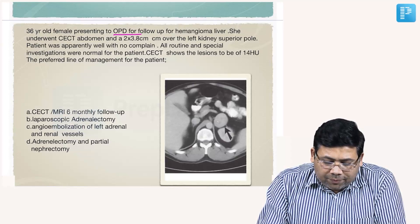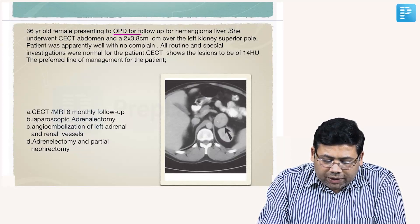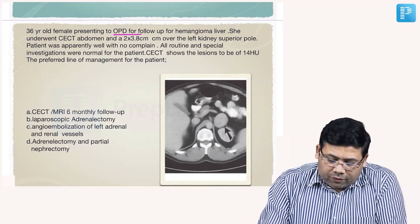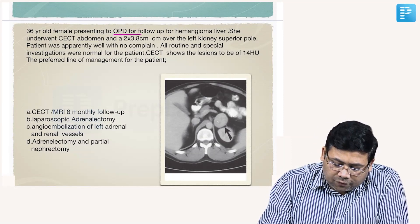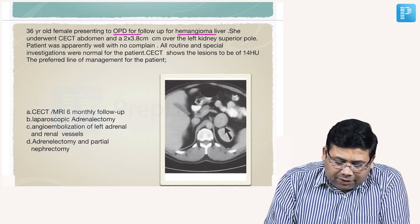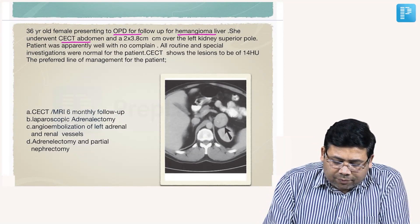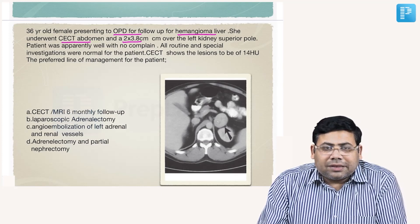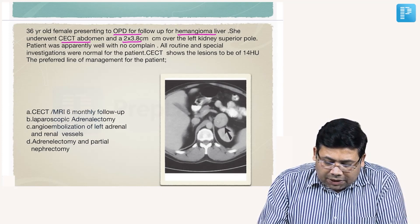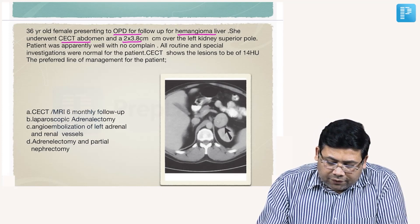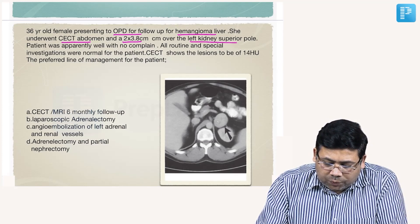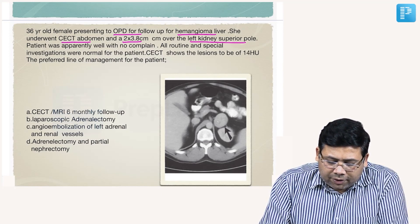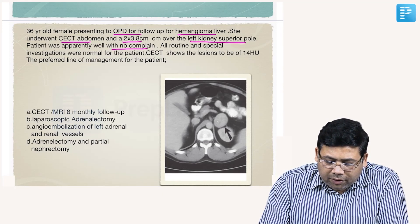A 36-year-old female presenting to OPD for her follow-up for hemangioma of the liver. She underwent a CCT abdomen and a 2 x 3.8 centimeter mass was seen over the left kidney superior pole. The patient apparently had no complaint.